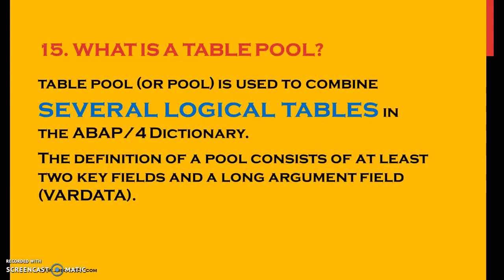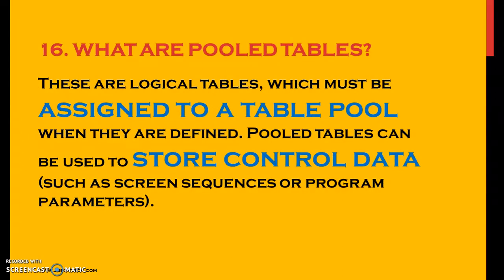So what is a table pool? A table pool or pool is used to combine several logical tables in the ABAP dictionary. The definition of a pool consists of at least two key fields and a long argument field of var data. So what are pool tables? Pool tables are logical tables which must be assigned to a table pool when they are defined. Pool tables can be used to store control data such as screen sequences or program parameters.